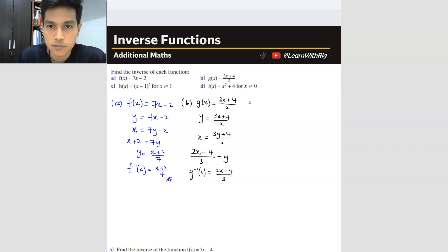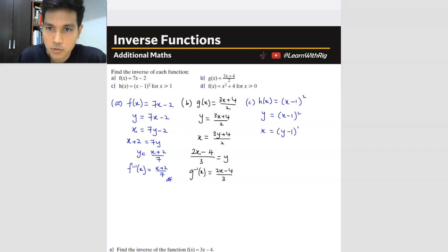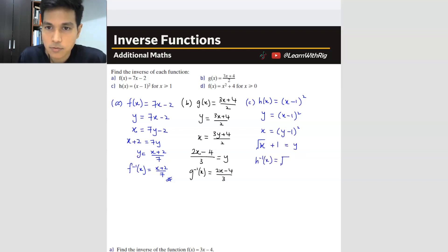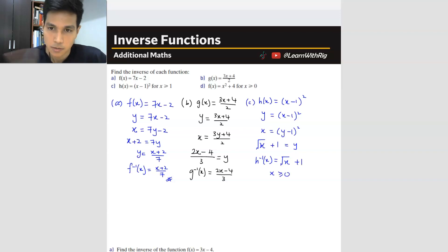Question C: h(x) = (x minus 1)². Make it become y, then swap places: x = (y minus 1)². Make y the subject: square root of x plus 1 equals y. So h inverse equals square root of x plus 1. But you have to write the domain: x must be more than or equal to 0, because x cannot be a negative number inside the square root, otherwise this inverse function will not exist.